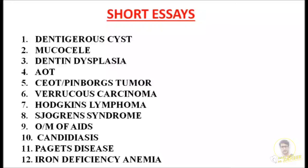The eleventh important question is Paget's disease. Looking into the diseases of bone chapter, Paget's disease is a very important short essay question. The twelfth and last important question is iron deficiency anemia. From the blood chapter, sickle cell anemia, pernicious anemia, and iron deficiency anemia are all very important — they can ask these as long essays or short essays.